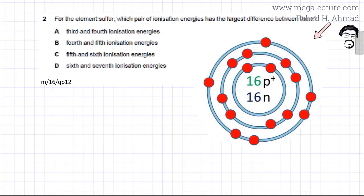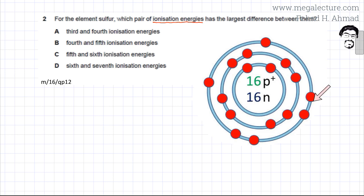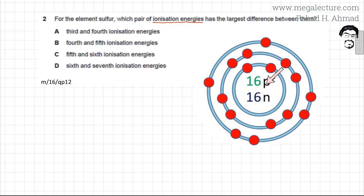I have drawn a diagram for a sulfur atom. We are talking about ionization energies and trying to remove electrons from sulfur, starting with the outer shell electrons. The outer shell electrons are further from the nucleus — the 16 protons in the nucleus attract these electrons, but the outer electrons are very far away. The distance is large and there is a lot of shielding effect from the inner electrons, so this positive nucleus is shielded and the outer electrons are not attracted very strongly.